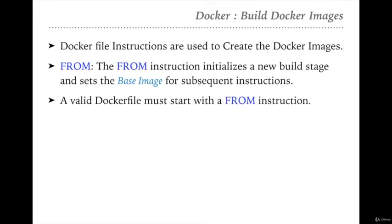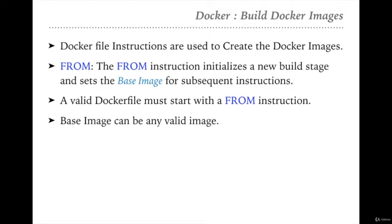A valid Dockerfile must start with the FROM instruction. If you are not starting your Dockerfile with FROM, then you are implementing an invalid Dockerfile. With the help of FROM, we can download the base image on top of which our image will be built. To build a Docker image, first we need a base Docker image. This base image can be any valid image — it could be the Jessie Linux image, Alpine, or the Debian Unix system. The format of FROM will be: FROM, then the image name, colon, then the tag — which is the version of that particular image.